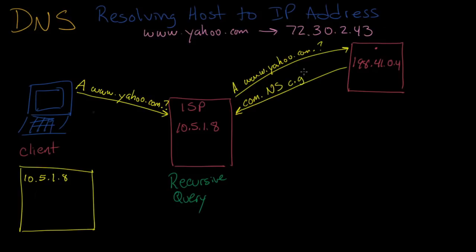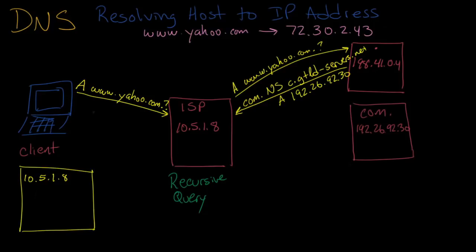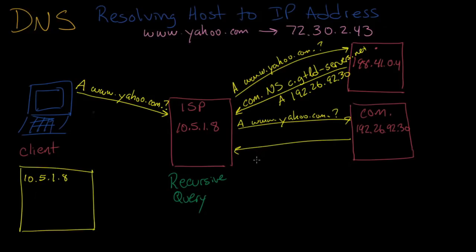What comes back says: go ask the .com domain name server, which is c.gtld-servers.net, whose address is 192.26.92.30. The ISP's name server takes that response and reissues the request to the .com DNS server, asking the same question again: what is the address for www.yahoo.com? And once again, this DNS server comes back and says: I don't know the answer either; why don't you go ask the yahoo.com name server?